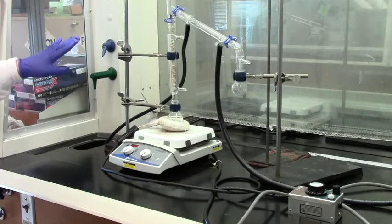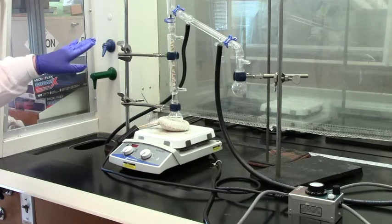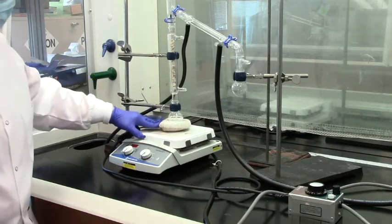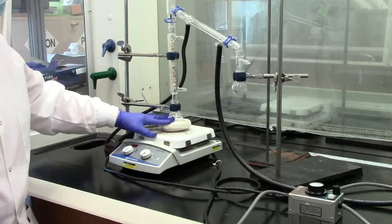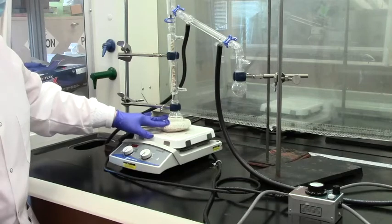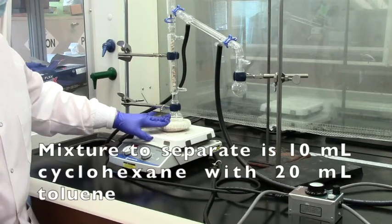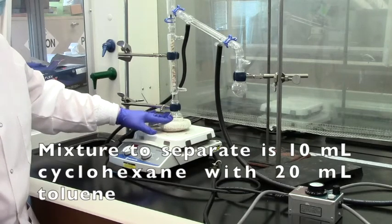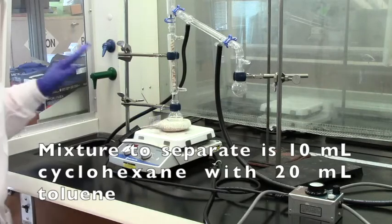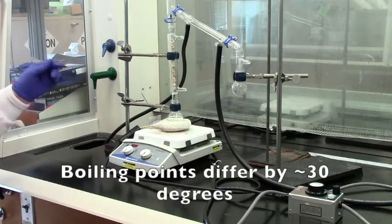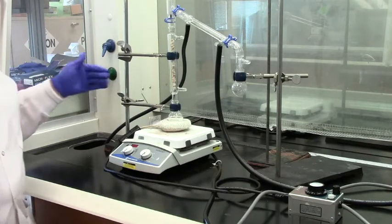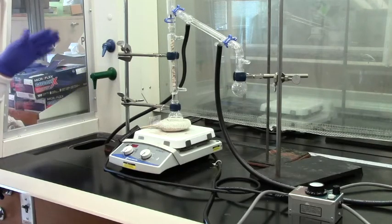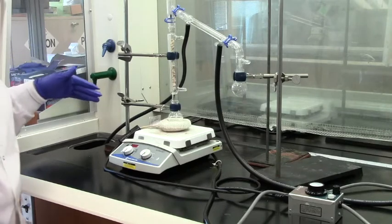I have the fractional distillation apparatus set up. I have my heating mantle here. Inside that heating mantle is a round bottom flask, a 50 milliliter one. I've got 10 mls of cyclohexane and 20 mls of toluene. And those two substances have different boiling points, about 30 degrees. Boiling point of cyclohexane is around 81. That of toluene is around 111.